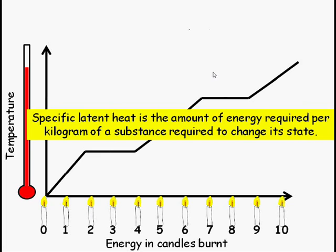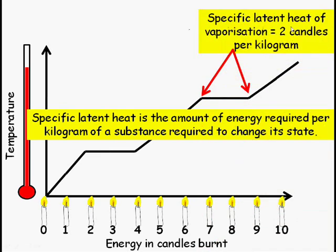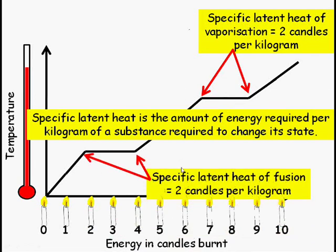Let's have a look at the specific latent heat of vaporization for this material. We found that it was two candles per kilogram to convert this from a liquid to a gas. And similarly, to convert this from a solid to a liquid, or from a liquid to a solid, and this works the other way around as well, it was two candles per kilogram as well. Obviously this is just an idealized example, but you get the idea that specific latent heat of whatever we're talking about, fusion or vaporization, is the amount of energy per kilogram required to change the state of the substance.